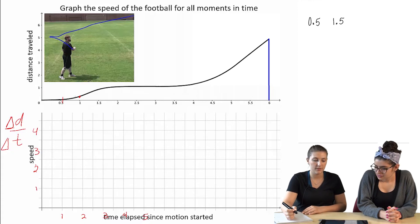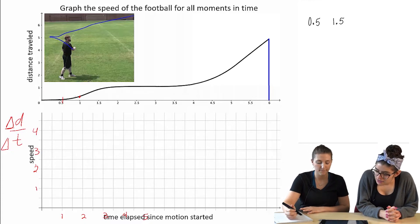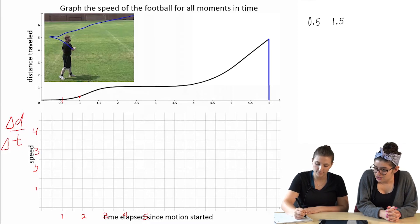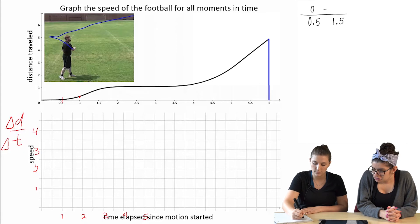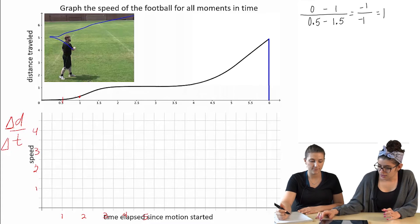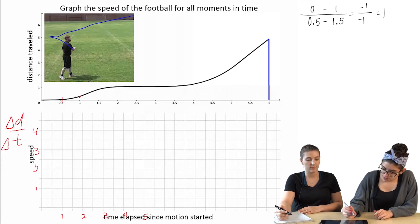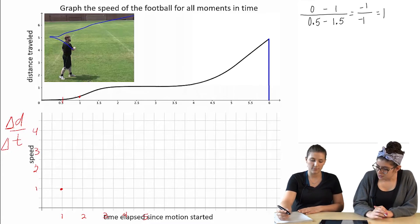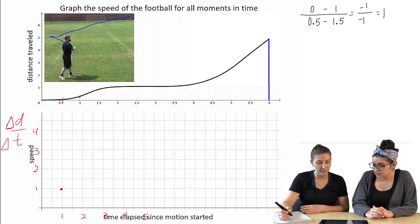So the distance at 0.5 is about 0, and the distance traveled at 1.5 is almost 1? I'll just do 1. So that gives us negative 1 on the numerator, and negative 1 on the denominator, which is 1. So then on our graph of speed, that's what it would look like? That's our estimate at 1? Yeah. Okay.